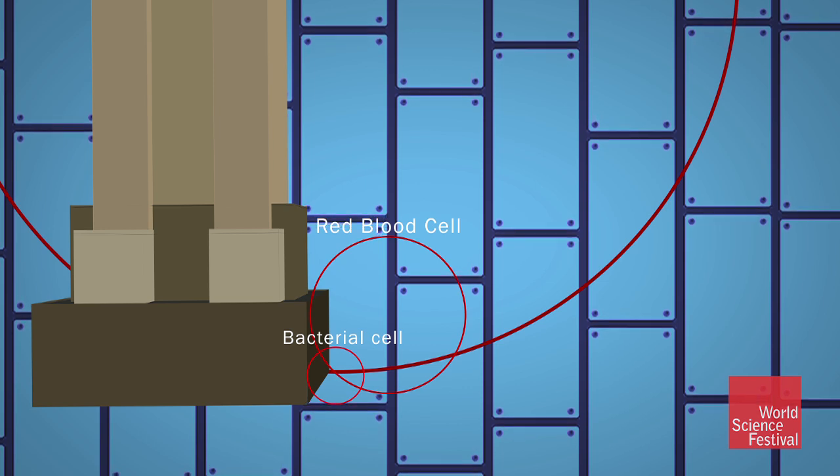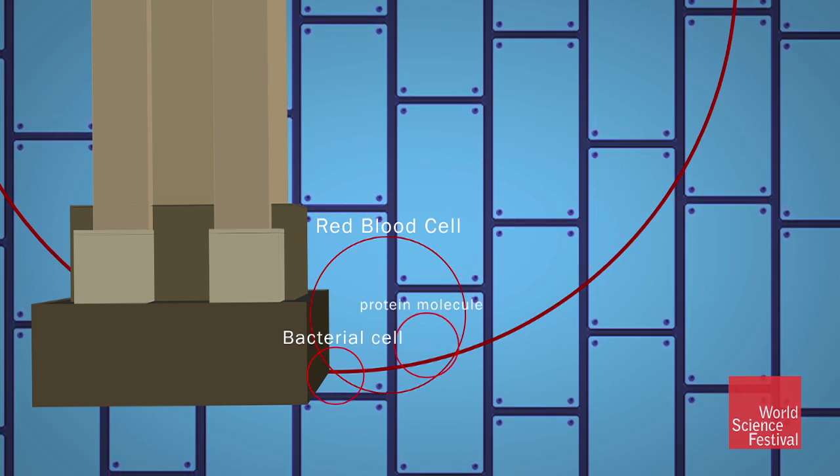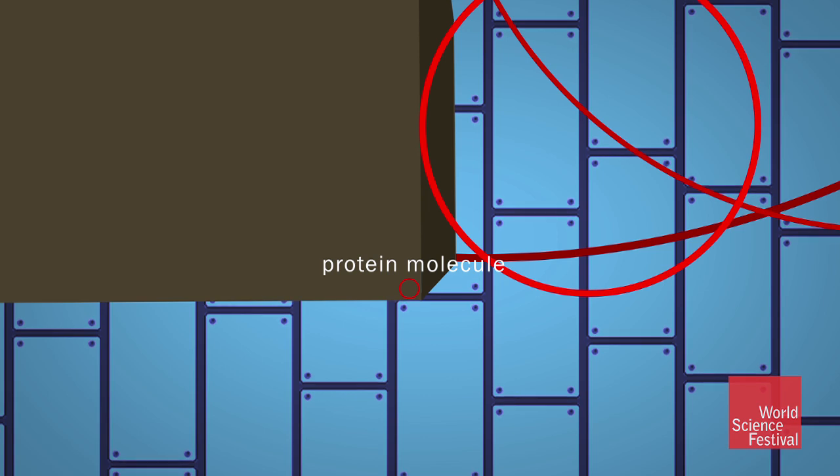Working down our scale, a run-of-the-mill protein molecule would be the same height as a small dog, about a foot and a half.